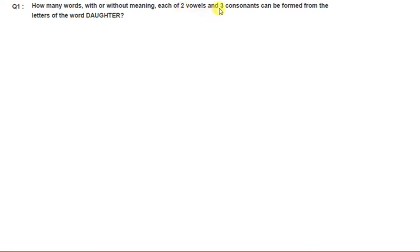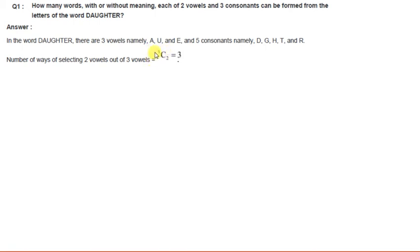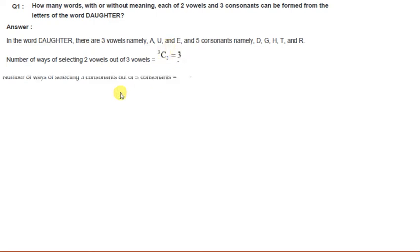We need to select two vowels from three and three consonants from five. The vowels can be selected in 3C2 ways, which equals 3, calculated as factorial 3 divided by factorial 2 into factorial 1. Similarly, consonants can be selected in 5C3 ways, which equals factorial 5 divided by factorial 3 into factorial 2. After calculation, 5C3 gives us 10.